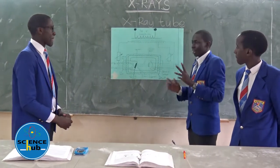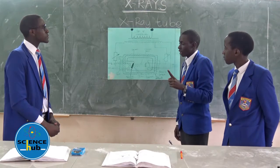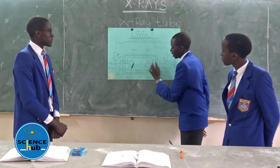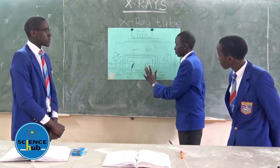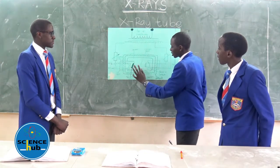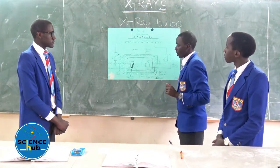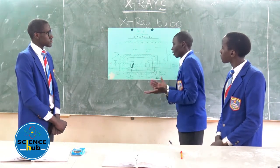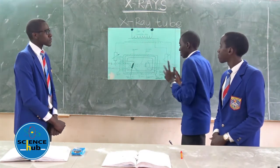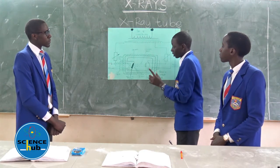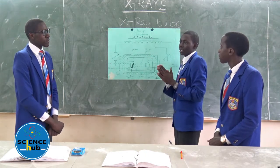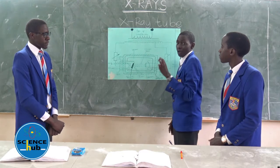The X-ray tube usually has two cycles: the first half cycle and the reverse half cycle. In the first half cycle, when the anode is positive and the cathode is negative, bombardment takes place — electrons hit the metal target and produce X-rays. But in the reverse half cycle, when the anode is negative and the cathode is positive, no bombardment takes place, so no X-rays are produced. Therefore, X-rays are produced in bursts.